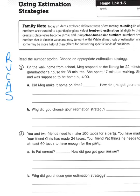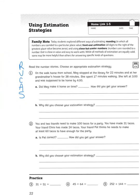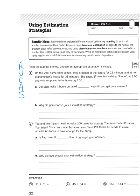So I'm going to read this problem, and then I'm going to reread it. On the walk home from school, Meg stopped at the library for 22 minutes and at her grandmother's house for 38 minutes. She spent 17 minutes walking. She left at 3 and was supposed to be home by 4. Did Meg make it home on time?